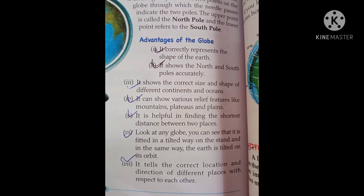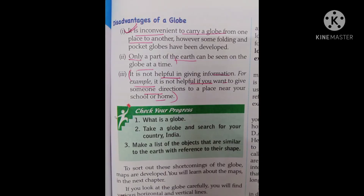Lastly, it tells the correct location and direction of different places with respect to each other. Now, the disadvantages of a globe.